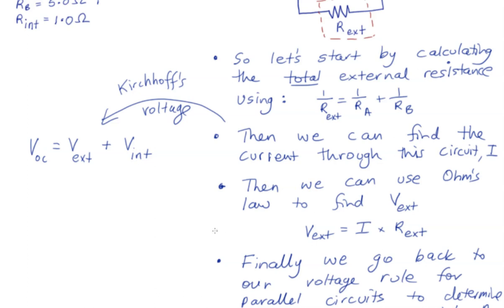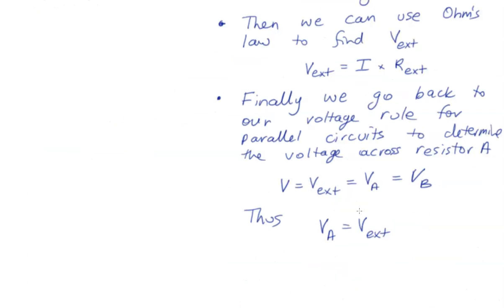Once we know the current through the circuit and we've worked out what the external resistance is, we can work out what the voltage across this external resistance is. Then finally, we can go back to our voltage rule for parallel circuits to determine the voltage across resistor A, because we know in a parallel circuit that the voltage is the same across all resistors or all loads.